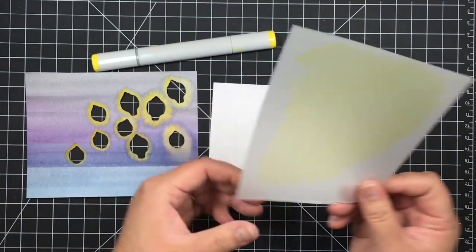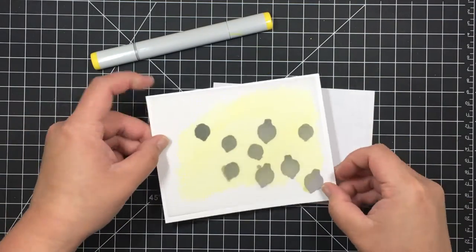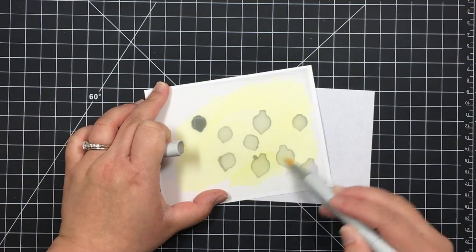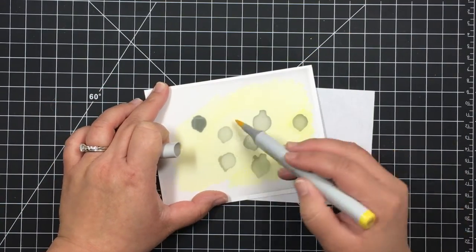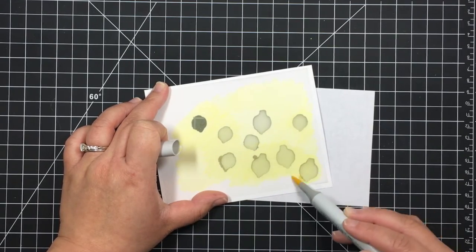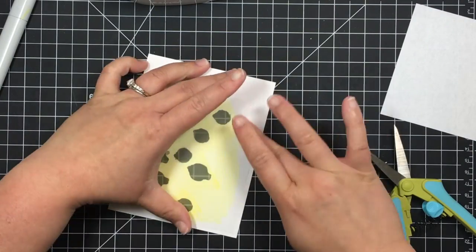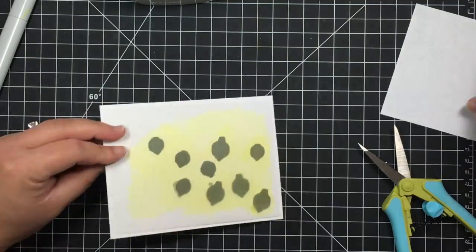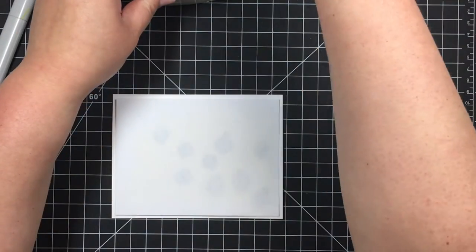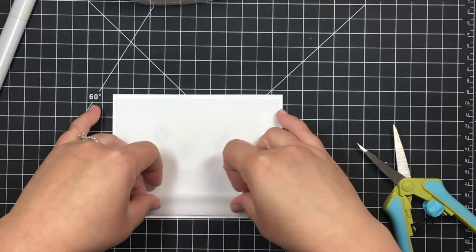This will match the mustard seed distress ink and give that glowing lantern effect behind the light. I line it up with the lanterns to make sure I have enough area colored and then color a little bit more around the edges. Next I tape the vellum down to the back of my watercolor panel and then tape a piece of plain copy paper on top of that. I don't want the actual light sticker to be visible through the vellum so the copy paper creates a soft diffuser that still allows the light to shine through.